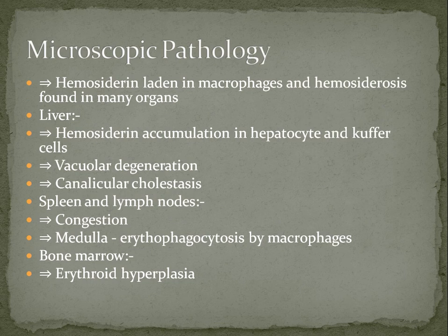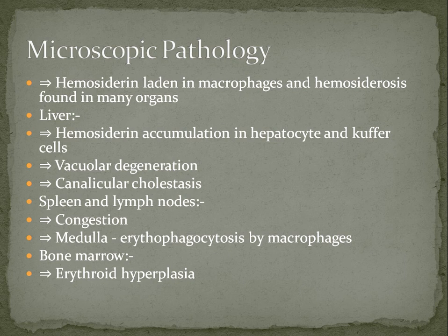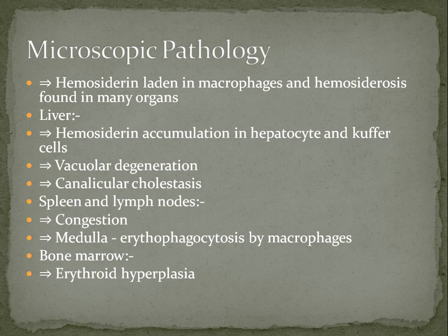To talk about microscopic pathology: hemosiderin-laden macrophages and hemosiderosis are found in many organs. In the liver, there is hemosiderin accumulation in hepatocytes and Kupffer cells, vacuolar degeneration, and canalicular cholestasis. In the spleen and lymph node, there is congestion, and erythrophagocytosis by macrophages is seen in the medulla of the spleen. In the bone marrow, erythroid hyperplasia is observed.